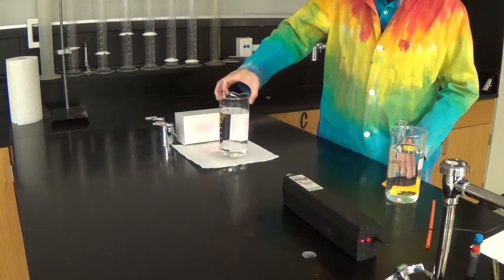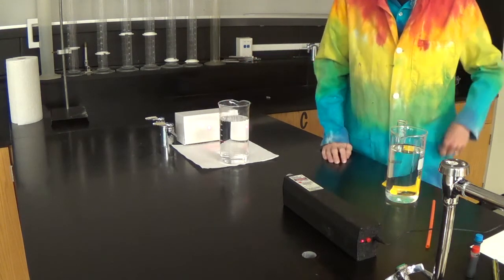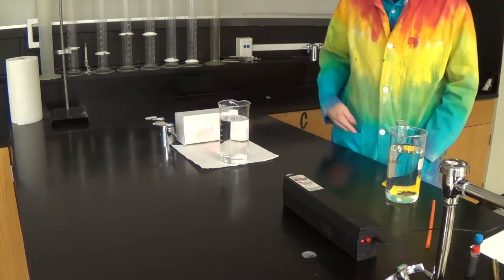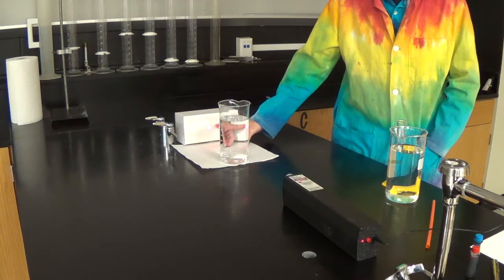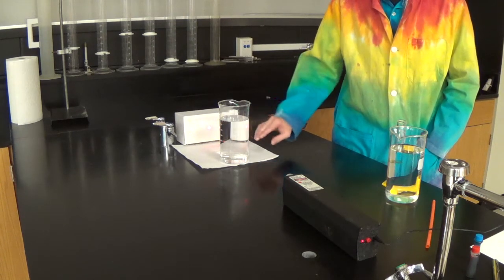This beaker of water is going to represent our blank. A blank is exactly as it sounds. It contains no color absorbing molecules. You should notice that we still have the same transmittance through our blank. So if you will notice the red dot, no change to the red dot with the blank.